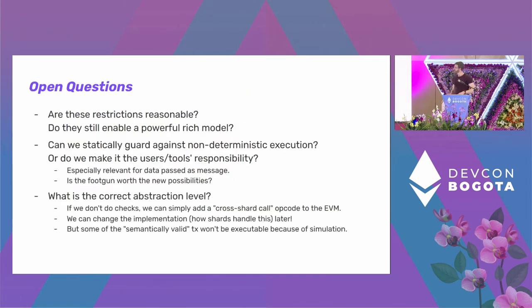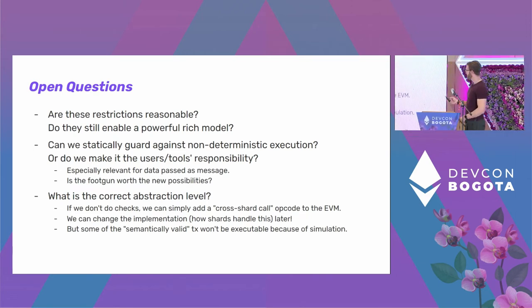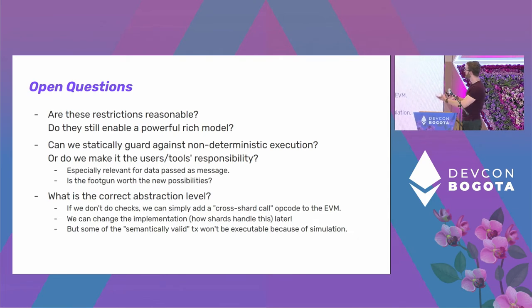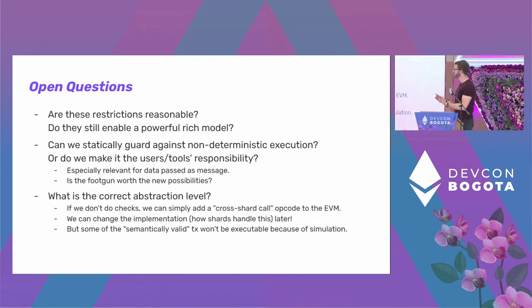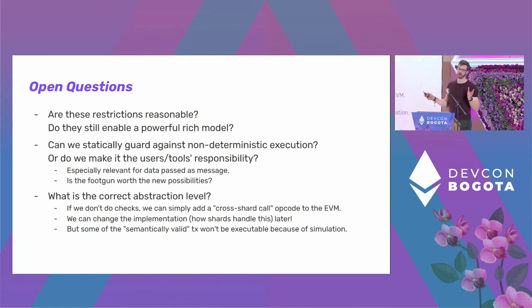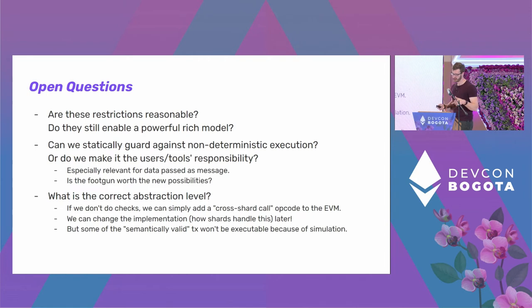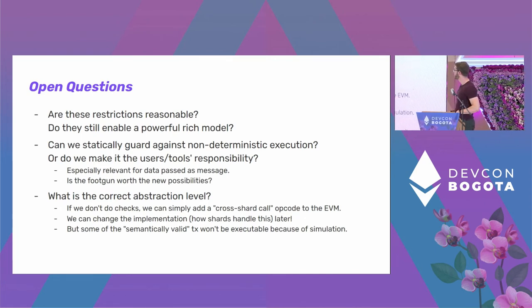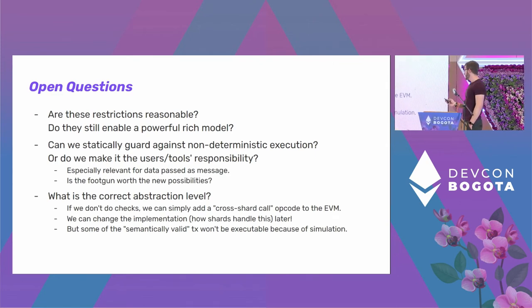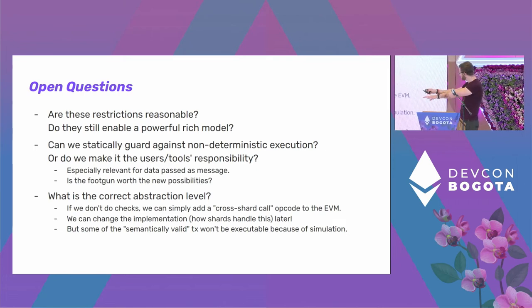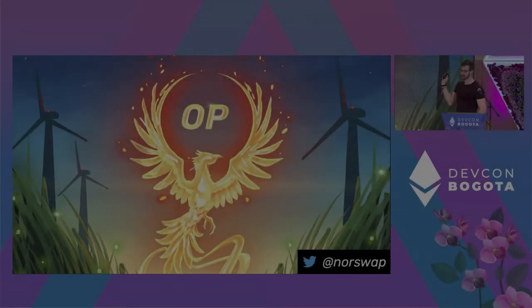Open questions: Is this reasonable? Is this a good idea? Are these restrictions feasible and do they give us a powerful, useful model in practice? Can we statically guard against non-deterministic execution, or is it the user's responsibility with tooling to detect cases? And what is the correct abstraction level? If we don't enshrine static checks, we can simply add a cross-shard call opcode to the EVM, and on the backend it will do what I explained — from the EVM's point of view there's just a new opcode. That has been my presentation.